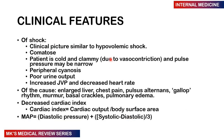Clinical features of cardiogenic shock overlap with those of hypovolemic shock. The patient may be comatose, cold and clammy due to vasoconstriction, with a narrow pulse pressure, peripheral cyanosis, poor urine output, increased JVP, and decreased heart sounds. There may be distant heart sounds, and features suggestive of specific causes such as an enlarged liver, chest pain, a gallop rhythm, a murmur, basal crackles, and pulmonary edema. In cardiogenic shock, there will be a decreased cardiac index — which is cardiac output divided by body surface area. The mean arterial pressure is calculated as: diastolic pressure plus (systolic minus diastolic pressure) divided by three.